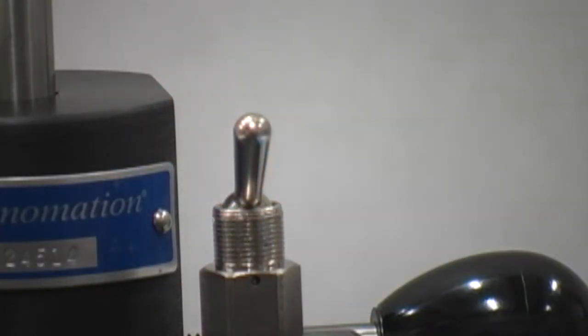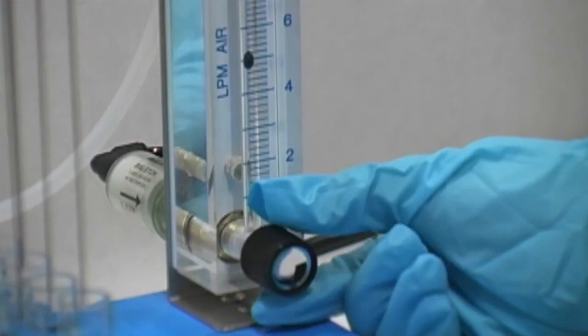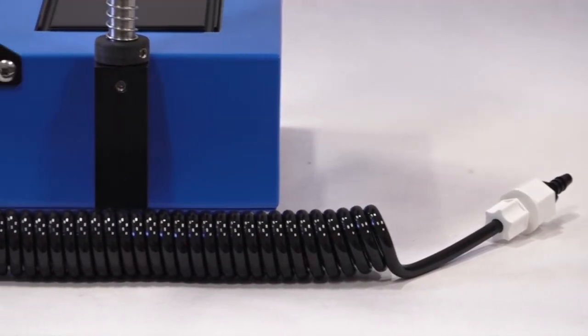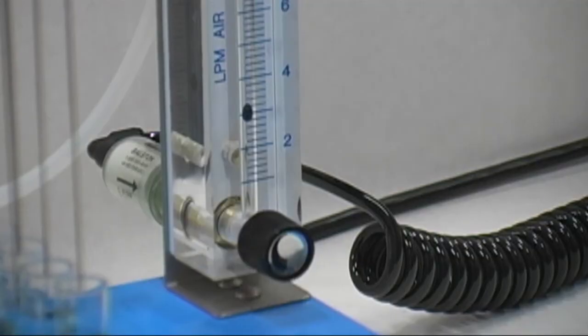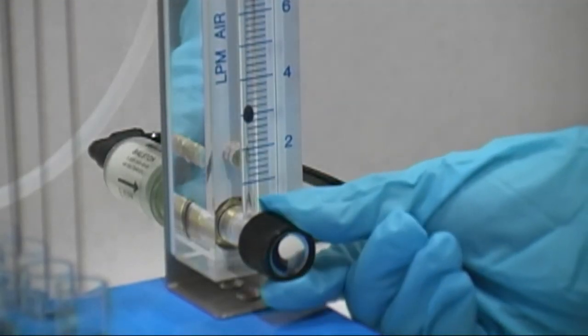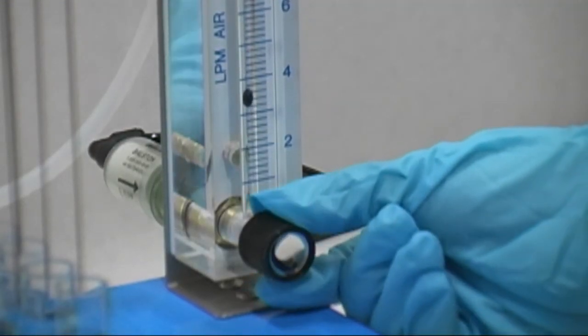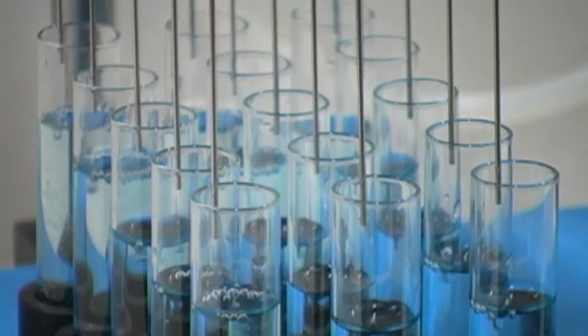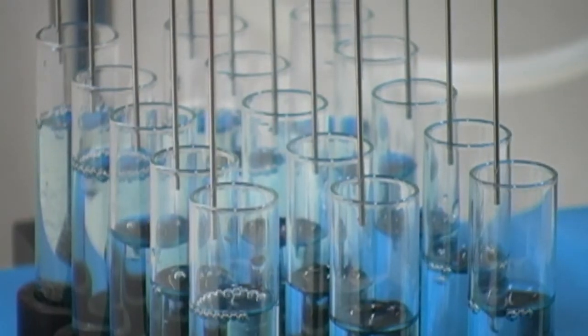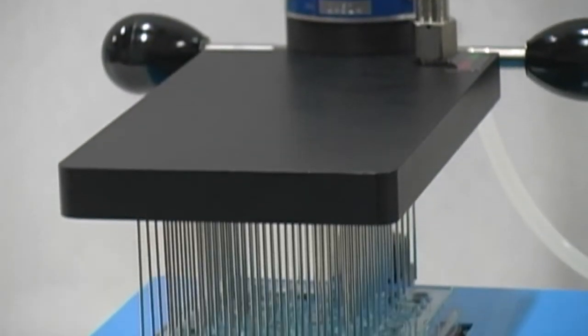Turn the manifold gas valve on. Turn the flow meter needle valve off. Turn on the gas flow to the instrument. Slowly increase the gas flow by opening the valve on the flow meter until a visible dimple appears on the surface of the solution. Evaporate as necessary or until dry.